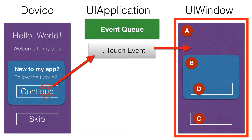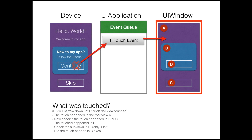The UIWindow narrows down from the root-level view. It asks: did the touch happen within view A? Yes. So now it knows it happened inside the root view, and it has to find out where exactly — so it checks B and C, which are the next views on the same level. Did it happen in B? Yes. So it skips C.